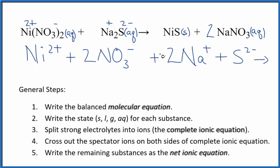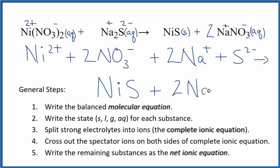For the products, we don't split solids apart in net ionic equations. This is going to be NiS, nickel 2 sulfide. Plus, the sodium nitrate splits into ions: 2 Na+ and 2 NO3-. This is the complete ionic equation.